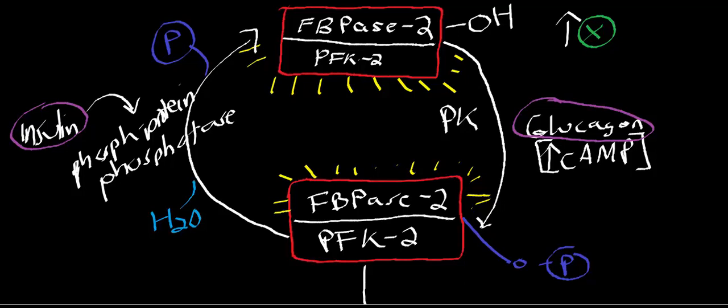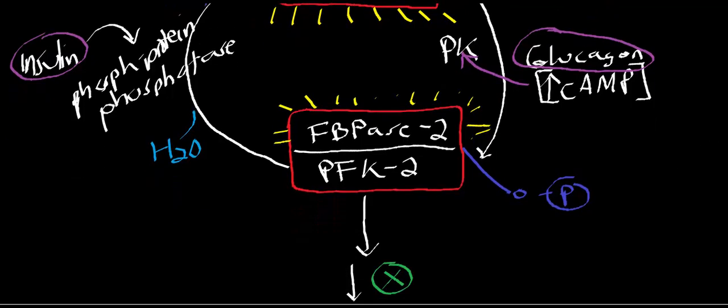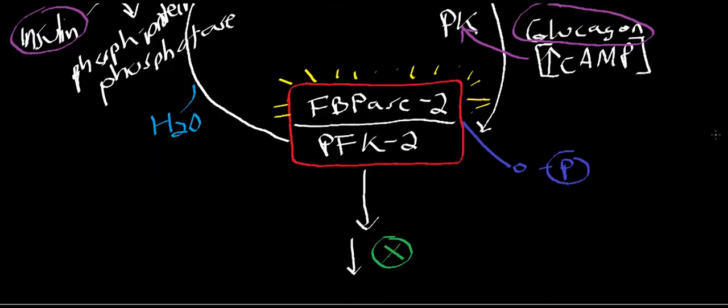Likewise, if I've been fasting, that's going to stimulate gluconeogenesis because blood sugar is low and I want to get glucose into the blood. Glucagon is released, binds to receptors, and increases cyclic AMP. Cyclic AMP activates protein kinase, which phosphorylates the bifunctional enzyme complex, favoring activation of fructose bisphosphatase 2. This destroys fructose 2,6-bisphosphate, inhibiting glycolysis and stimulating gluconeogenesis.